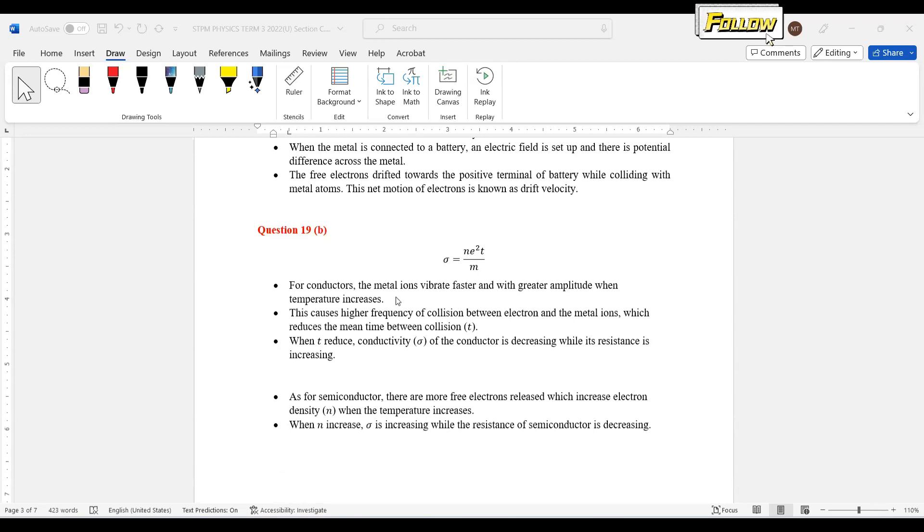For conductors, the metal ions vibrate faster and with greater amplitude when temperature increases. This gives higher frequency of collisions, meaning they collide more frequently, and it reduces the mean time between collisions. From the formula we can see that when t decreases, the conductivity of the conductor is decreasing and this causes higher resistance of the conductor.